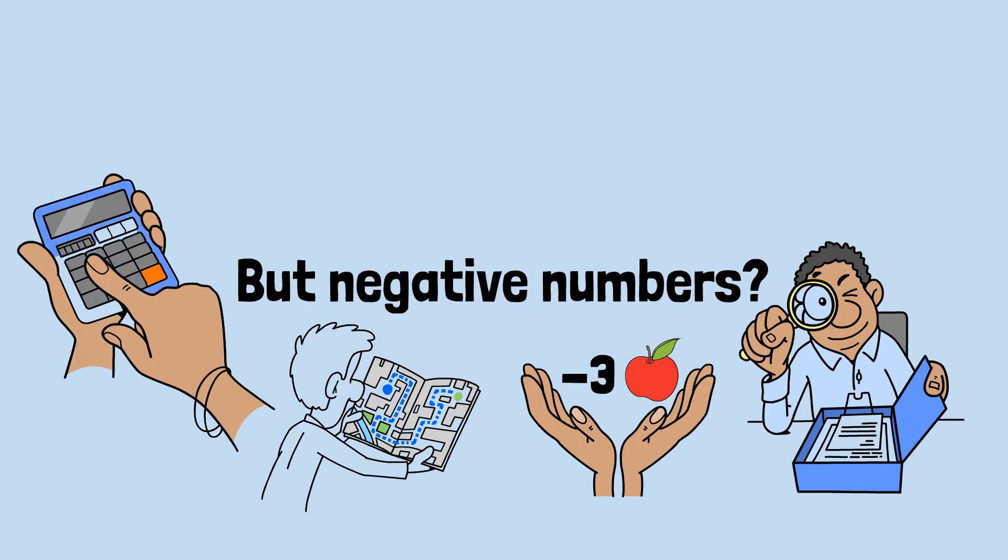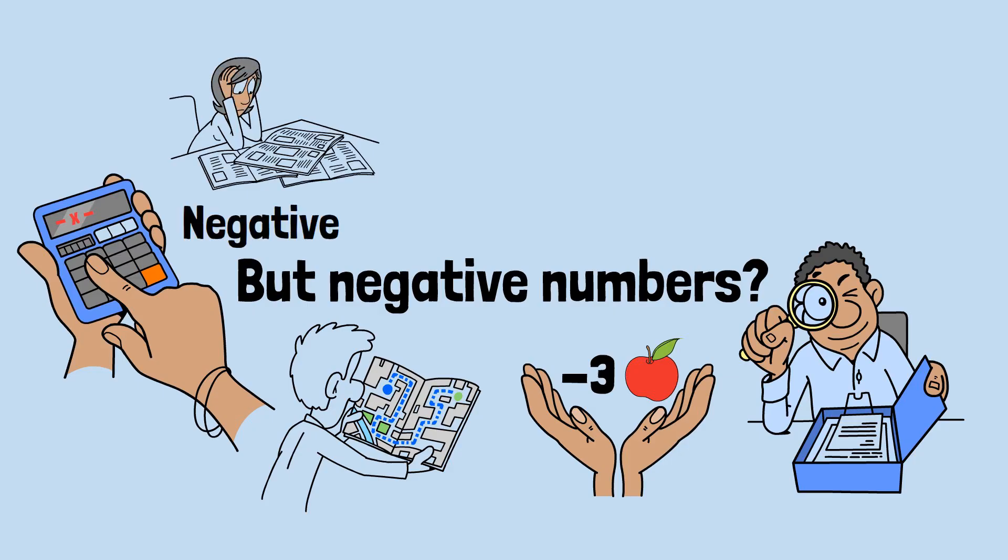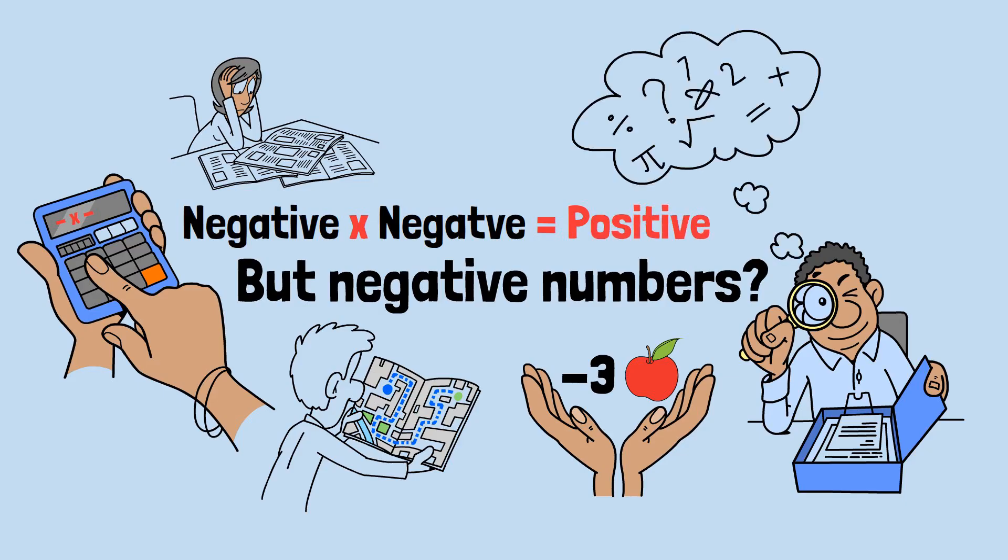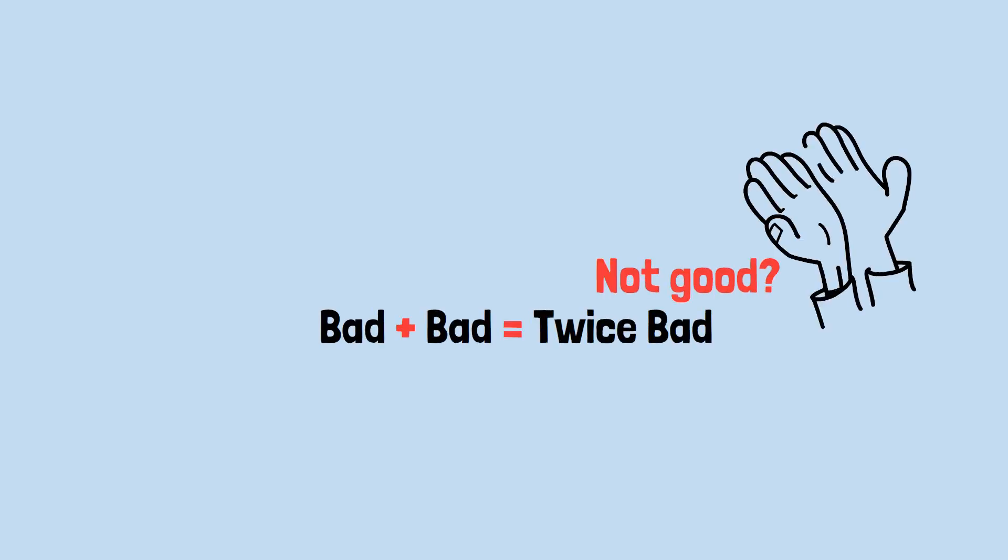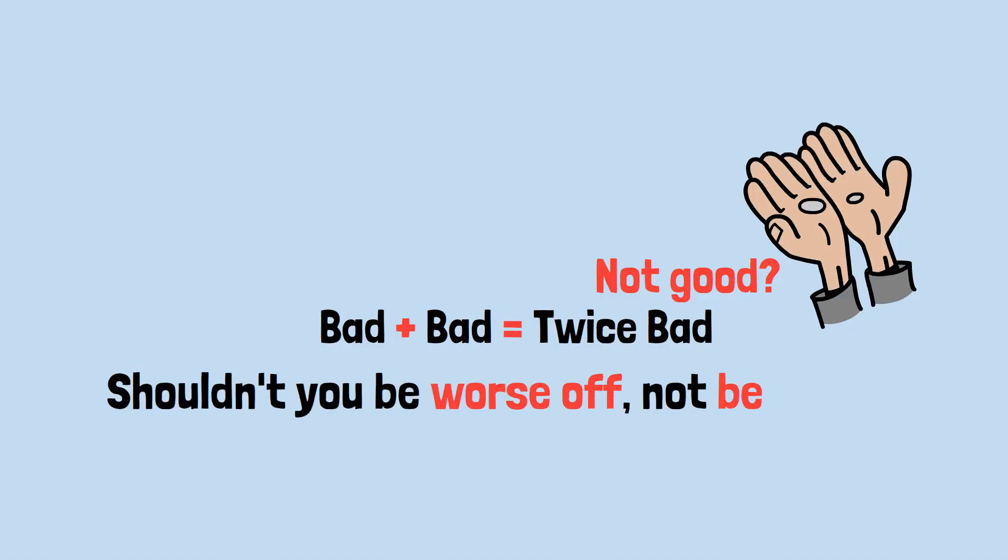So when we start multiplying these abstract concepts together, our intuitive understanding of mathematics begins to break down. The rule that a negative times a negative equals a positive isn't just counterintuitive. It seems to violate the basic logic we use to navigate the world. If something bad happens twice, shouldn't that be twice as bad? Not good. If you lose money twice, shouldn't you be worse off, not better off?